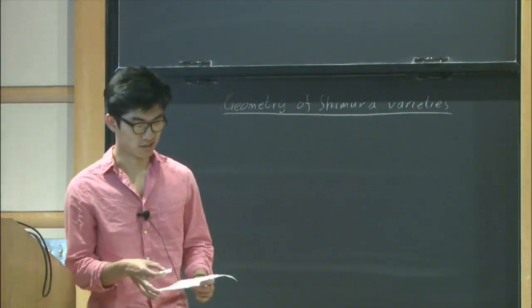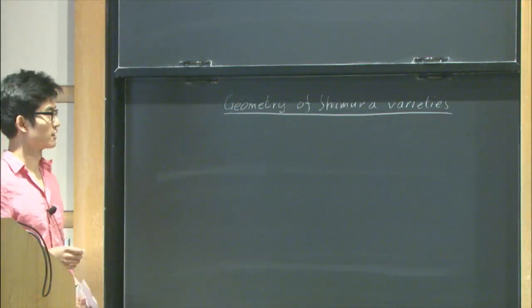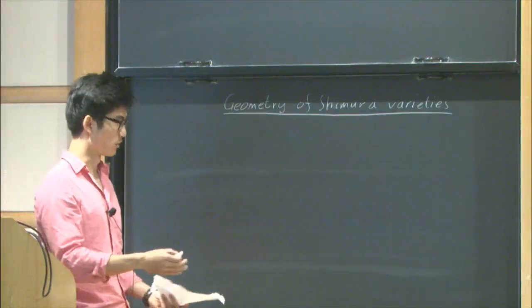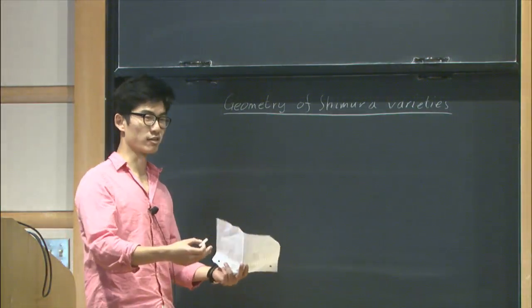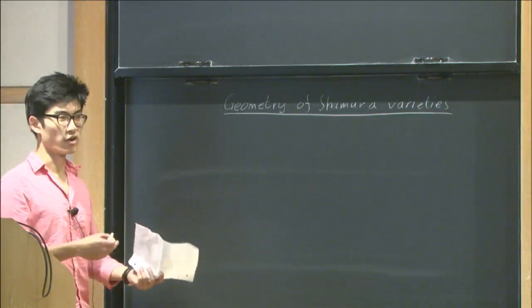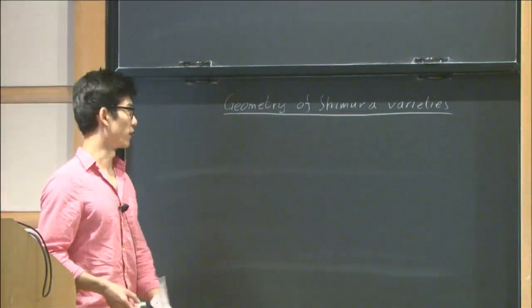Thanks for the introduction and the opportunity to speak. My talk is titled Geometry of Shimura Varieties, but I'm probably going to talk about something much more basic. I want to give the most basic example of a Shimura Variety, which is that of a modular curve, to try and motivate why we study these objects, and then at the very end I'll talk a little bit about what I work on.